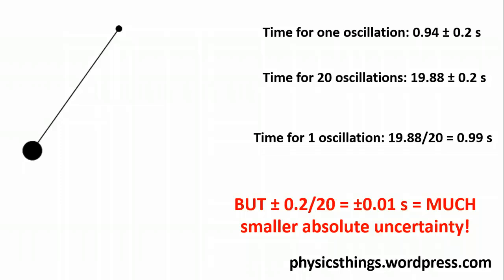So remember, if this comes up in the exam: how can we improve the accuracy, improve the uncertainty on a time measurement? We can measure multiple oscillations and then divide by the number of oscillations to get the time for one oscillation. But that also means we divide the absolute uncertainty by the number of oscillations.